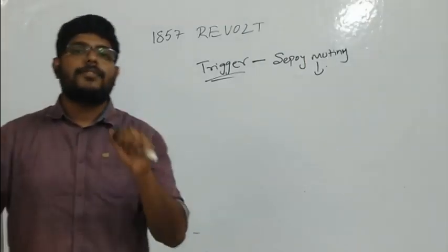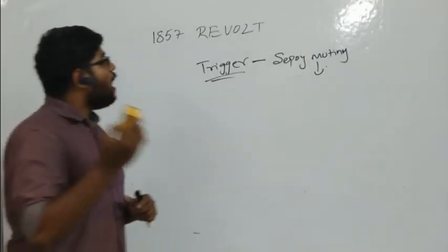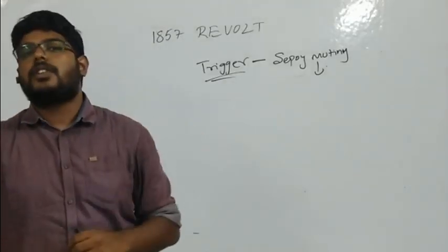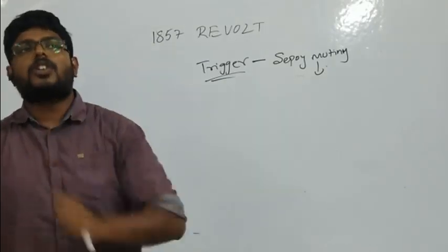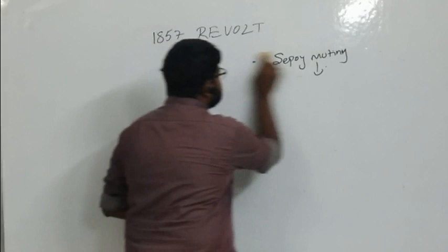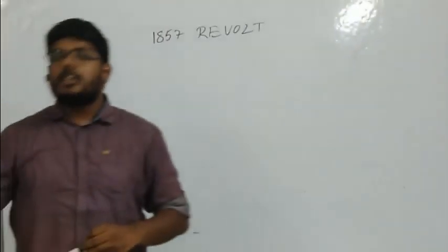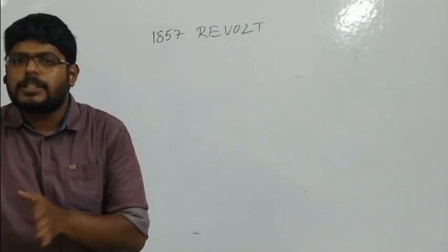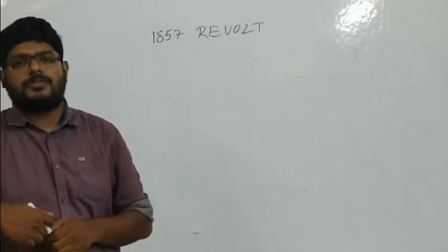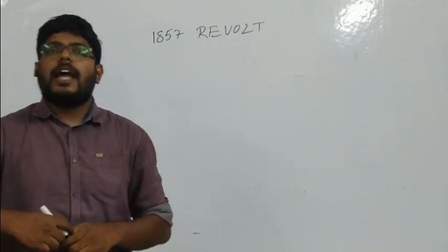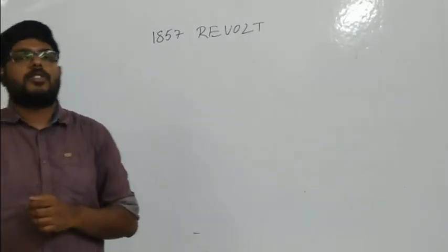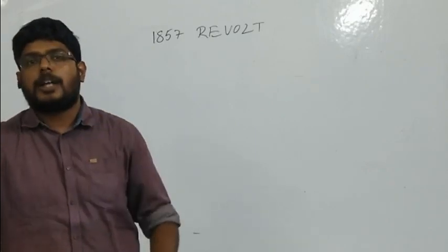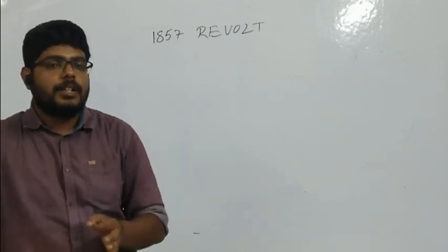Before going to the 1857 revolt, let's understand the meaning of a revolt. A revolt is a response to oppression. Every person has a revolt in their life — for example, we revolt against our parents. Daily our parents shout at us, but we don't respond immediately. We respond only when our complete patience and saturation is exhausted, and that big response is called a revolt.